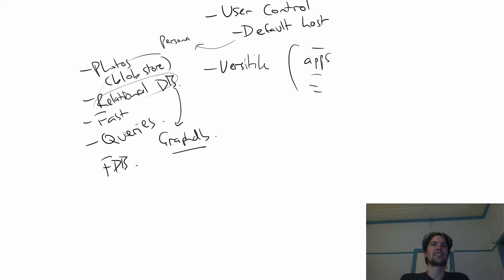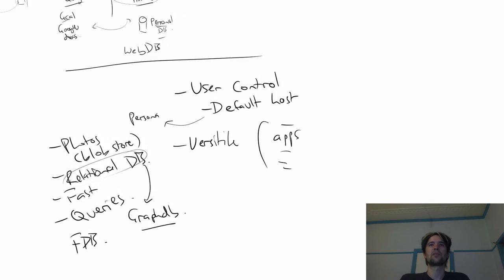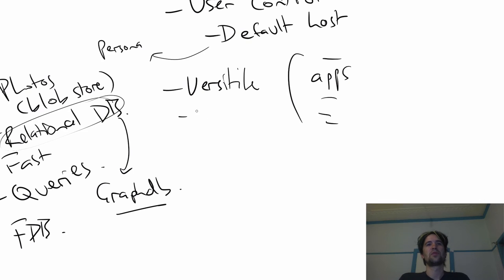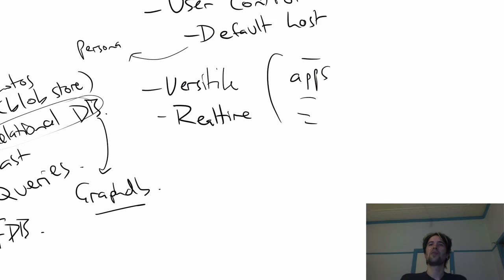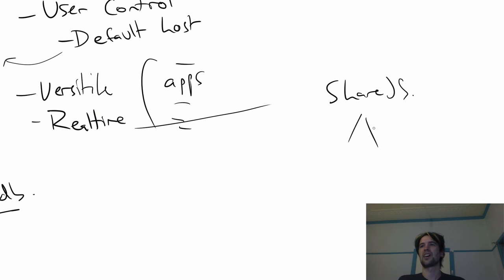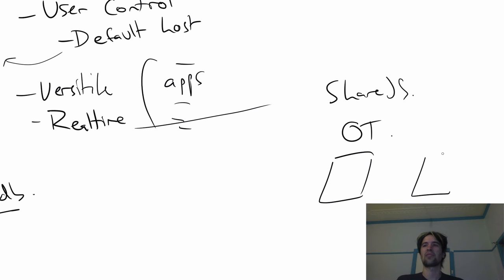If a product like FoundationDB hadn't been bought and eaten by Apple, that might also be a nice option. This is standard database stuff, and if we want to design a database that all different applications can write to, it's going to need to support some of these features. Another thing I want is real-time support. Over the past few years I've been working on ShareJS, which lets you do distributed real-time operational transform — OT — making applications where as one user types data, every other user looking at the same data will see that update in real time.